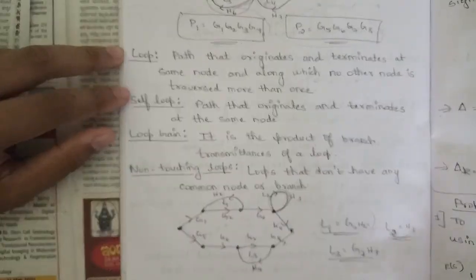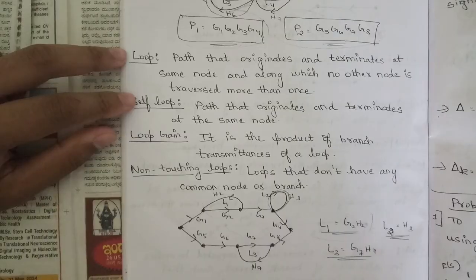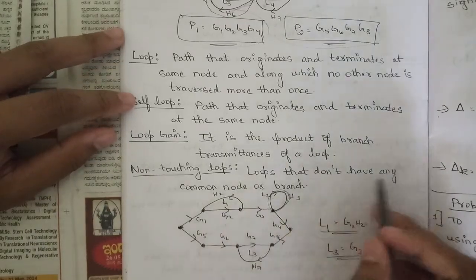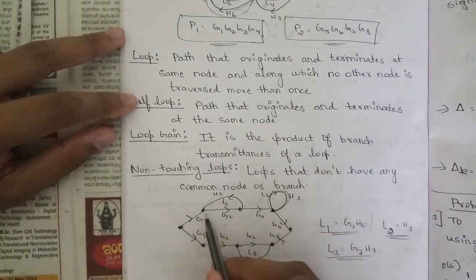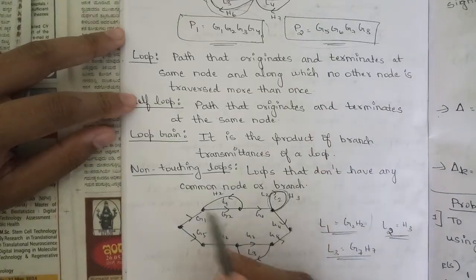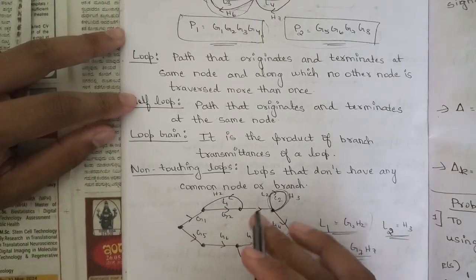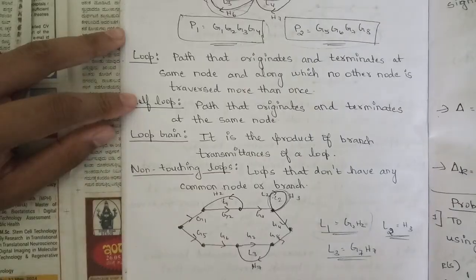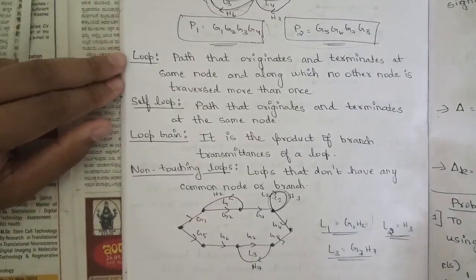Loop gain is the product of branch transmittances of a loop — for example, g2×h2 is a loop gain. Non-touching loops are loops that do not share any common node or branch. For example, loops L1 and L2 with separate nodes and no common nodes between them are non-touching loops.